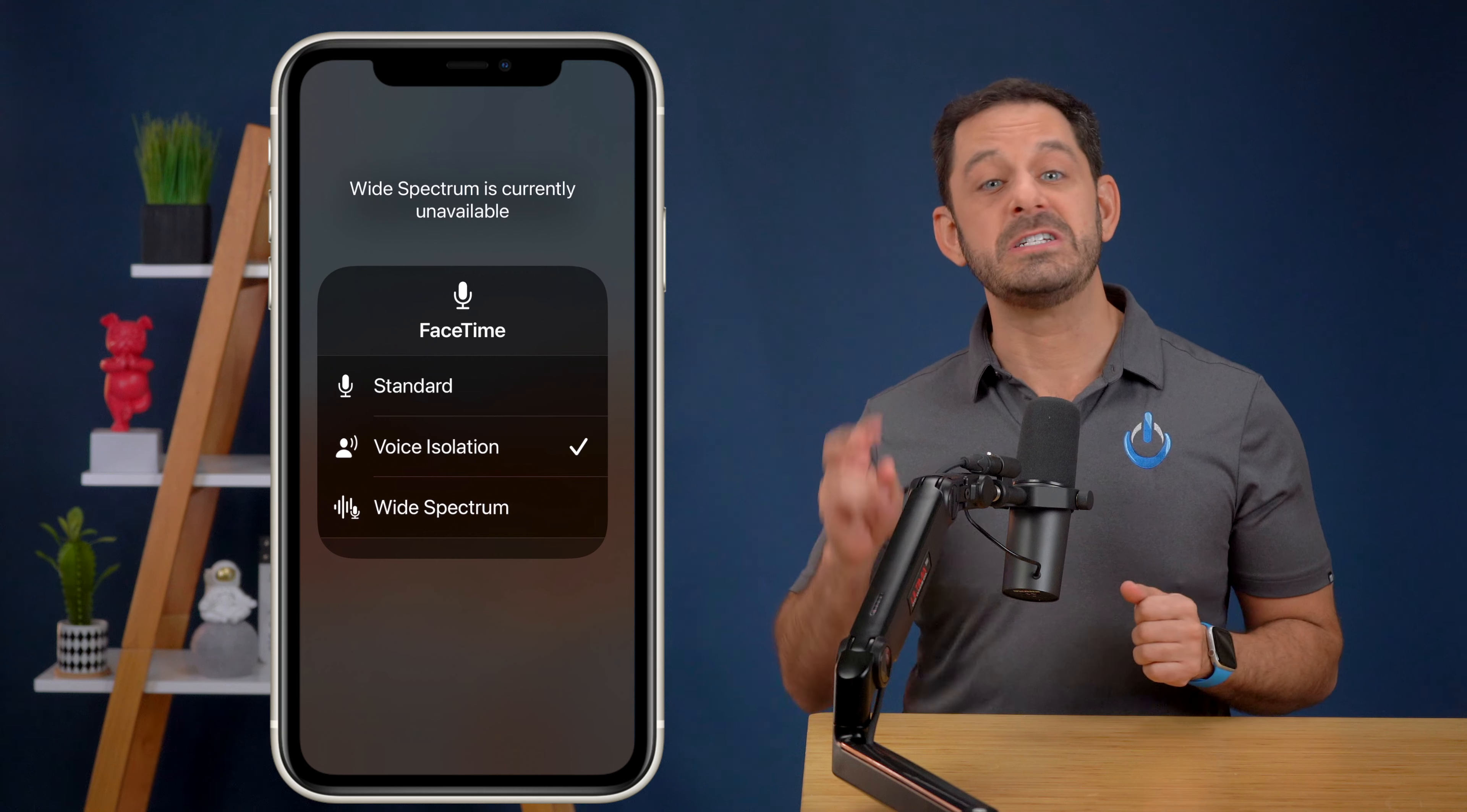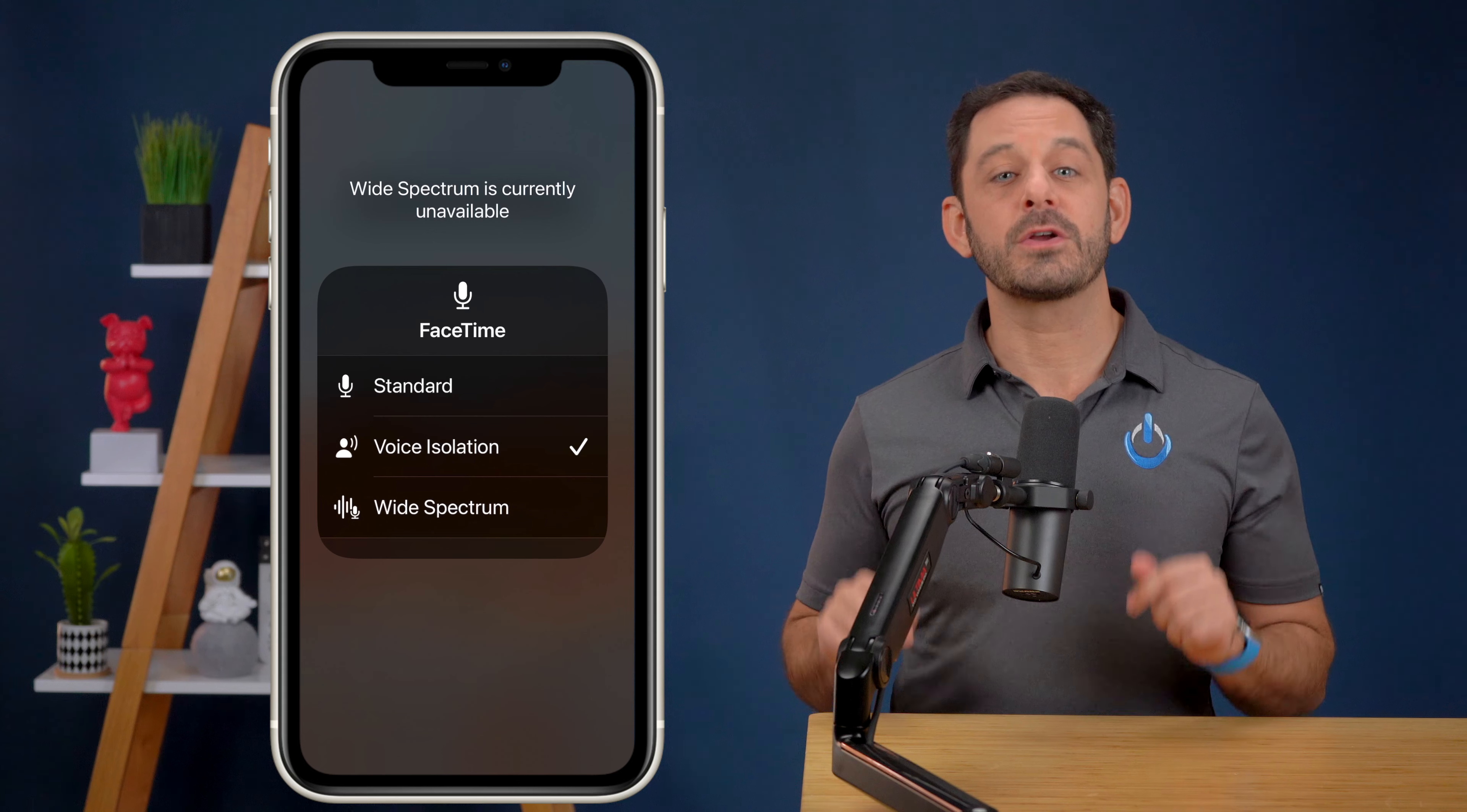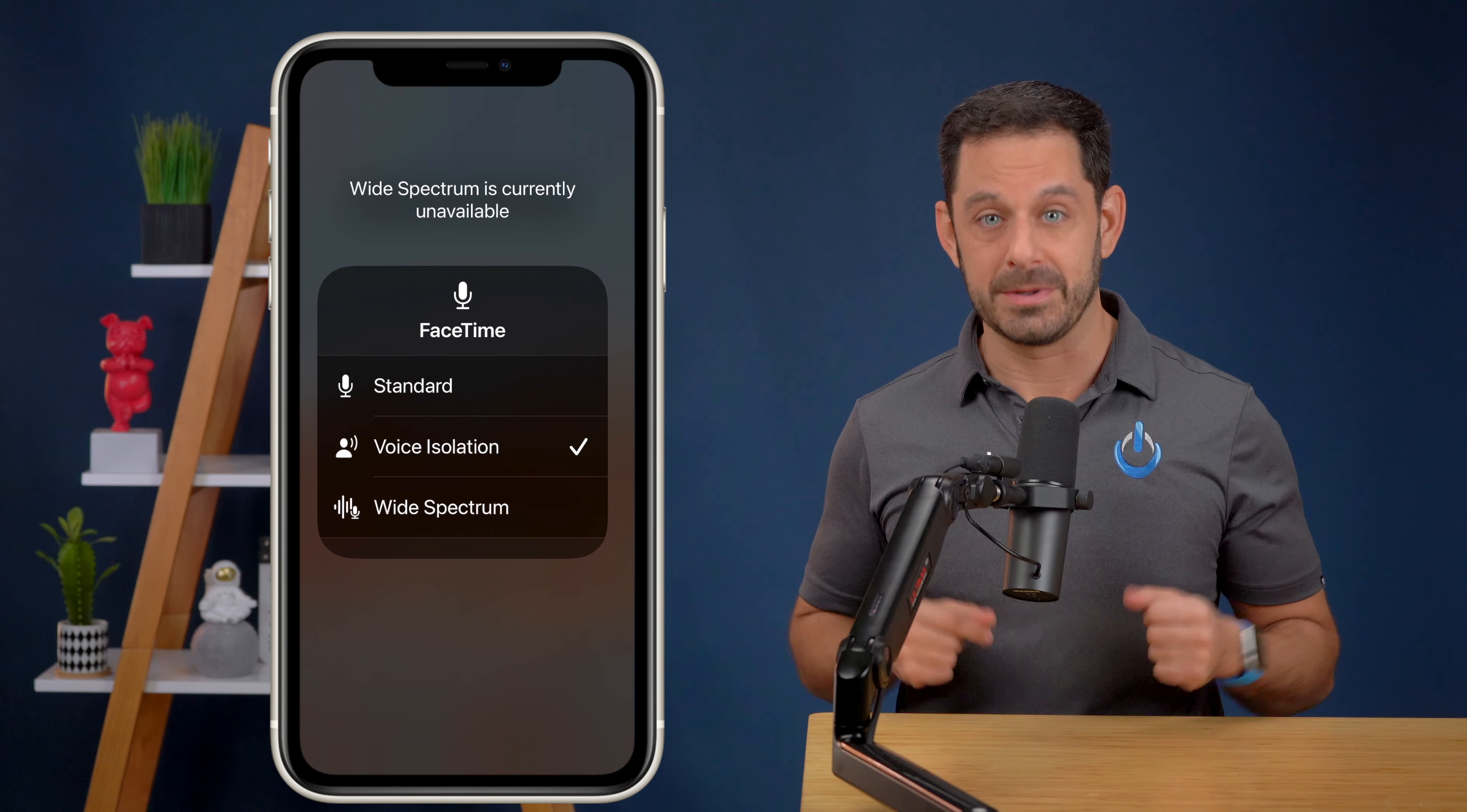And from here, you'll see two options, voice isolation and wide spectrum. Wide spectrum is perfect when you want the other person to be able to hear your surroundings. So for example, if you're at the beach and you want the other person to be able to hear the waves.